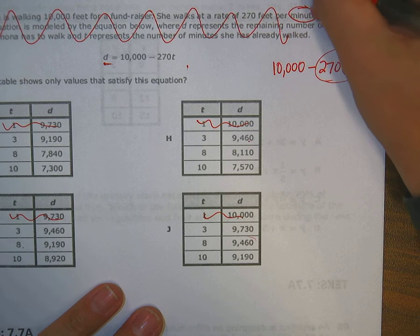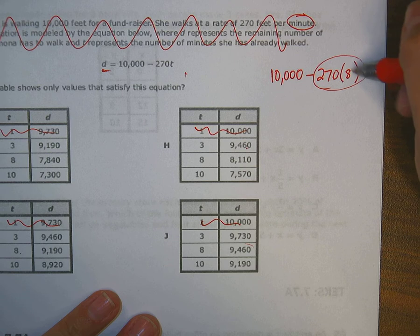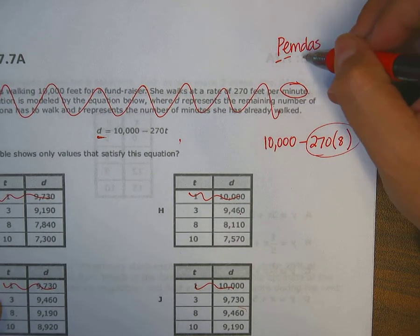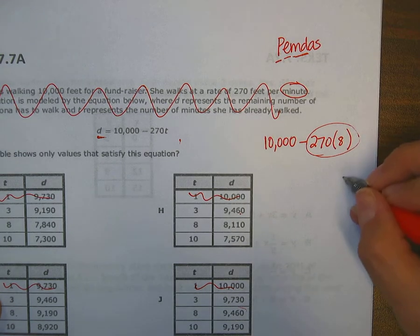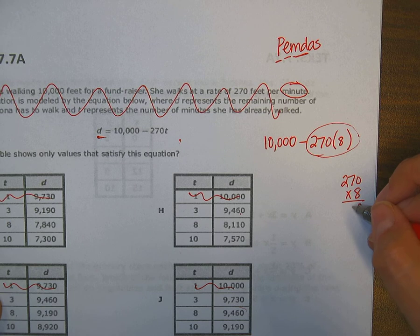Order of operations tells me I have to do this first because PEMDAS says parentheses, which there's really nothing in my parentheses to do, it's just an eight. Then it has to be multiply and divide. So multiplying 270 times eight. Eight times zero, what is that? It's not 48, I think it's 56. I hope it is. I hate eights. 16, 21, okay, 2160.